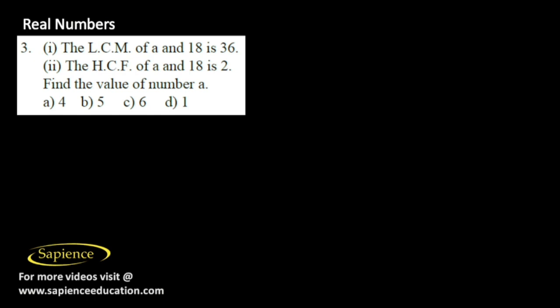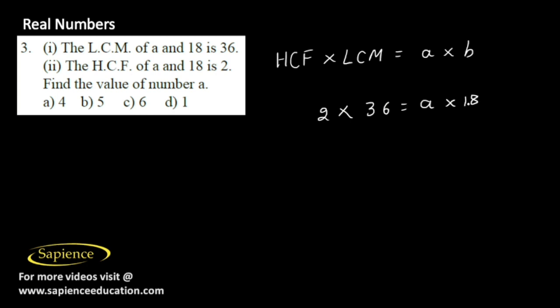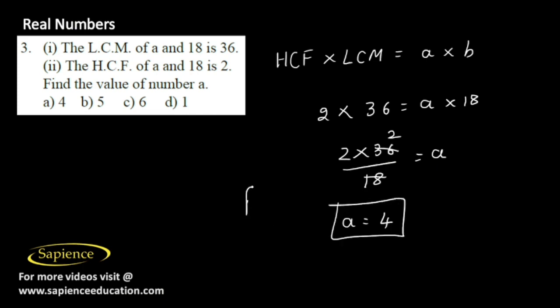The LCM of a and 18 is 36, the HCF of a and 18 is 2. Find the value of a. Using the relation HCF into LCM equals product of the two numbers: 2 into 36 equals a into 18. So a equals 2 into 36 divided by 18, which gives 2 into 2 equals 4. Option A is the correct answer.